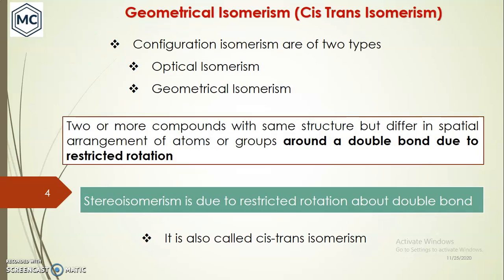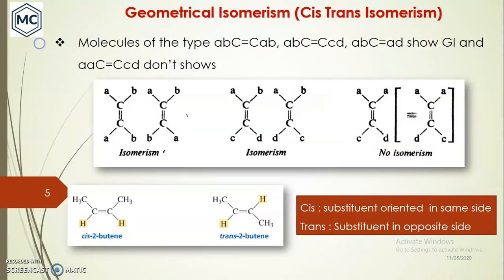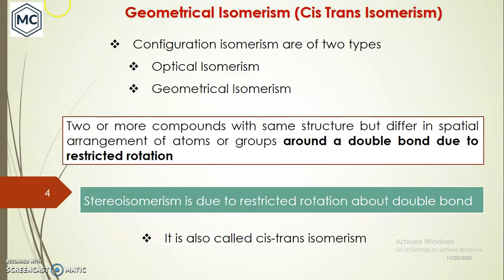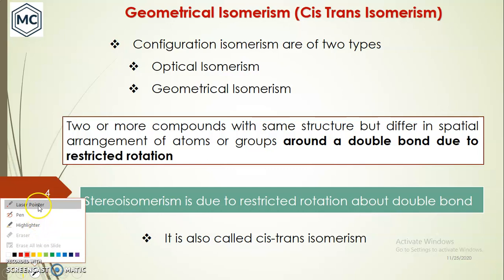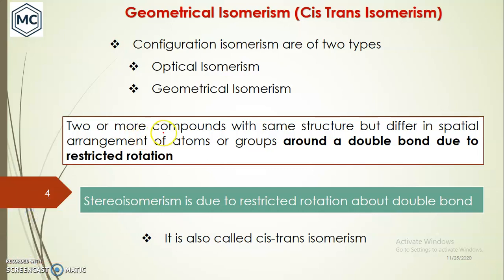Configurational isomerism can be classified into two types: one is optical isomerism and another one is geometrical isomerism. In geometrical isomerism, two or more compounds have the same structure but differ in the spatial arrangement of atoms or groups around a double bond.